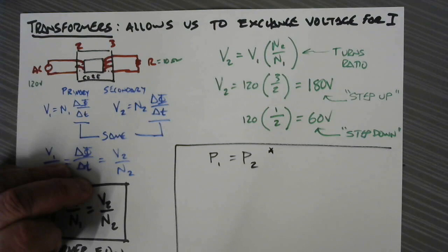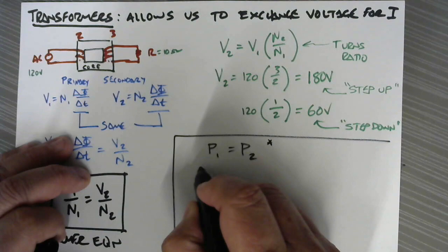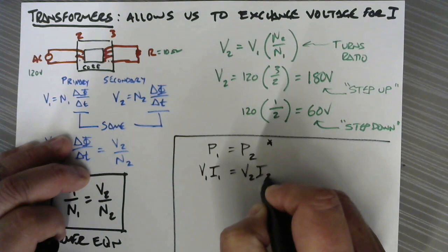But hey, what the heck, this is an ideal situation, just like with the ideal simple machines. And that means that the product of voltage one and current one is equal to the product of voltage two and current two.